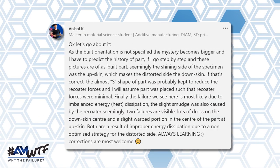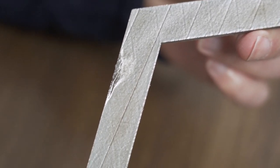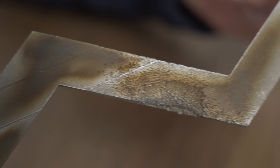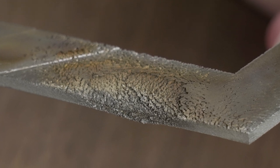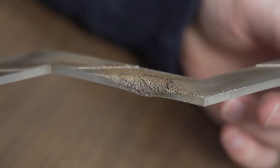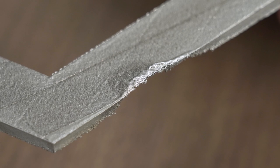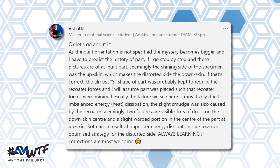Here's what he says: as the build orientation is not specified, the mystery becomes bigger and I have to predict the history of the part. Going step by step, seemingly the shining side of the specimen was the up skin, which makes the distorted side the down skin. The failure we see here is most likely due to imbalanced energy dissipation, and the slight smudge was also caused by the recoater. Two failures are visible: lots of dross on the down skin center, and a slight warp portion in the center part at the up skin. Both are a result of improper energy dissipation due to a non-optimized strategy for the distorted side.